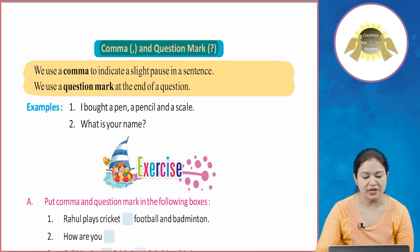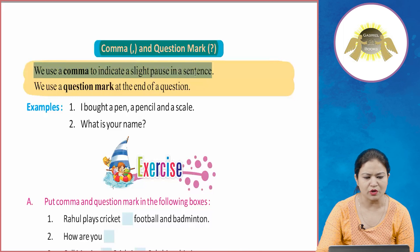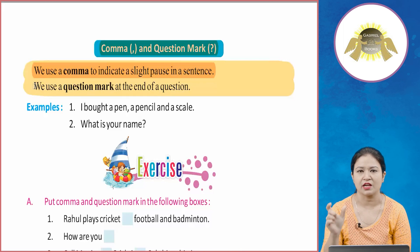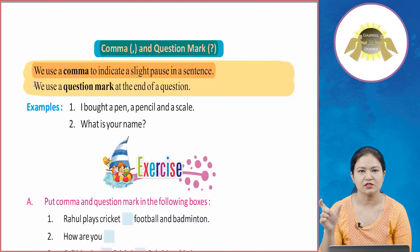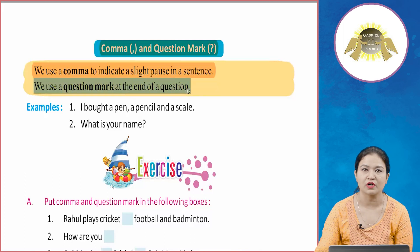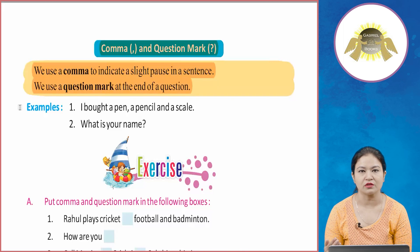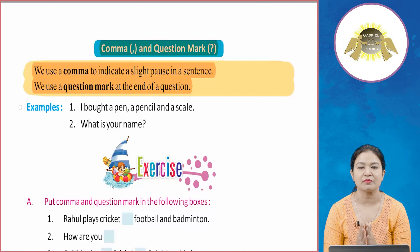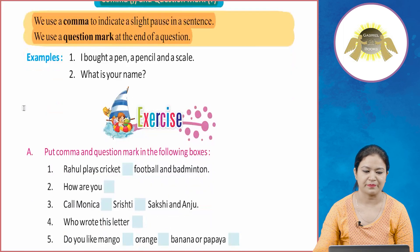We use a comma to indicate a slight pause in a sentence. When there is a slight pause needed, we use a comma so the first part of the sentence is separated. We use a question mark at the end of a question, to show that we are asking something in that sentence.